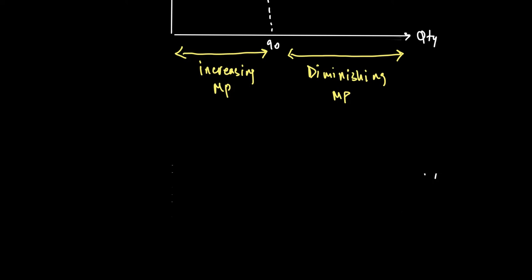ATC also falls, but it will be above AVC because ATC includes AFC. So it will also be a U-shaped curve — starts to fall, but as soon as it meets MC it starts to rise again — but the gap between ATC and AVC will be shrinking.